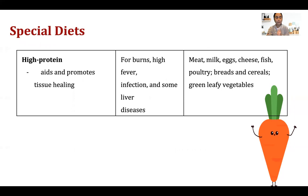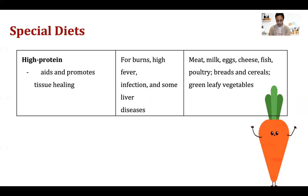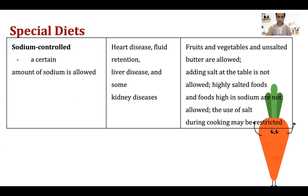High-protein diet is for tissue regeneration and tissue repair. It is vital for patients with burns, high fever, infection, and some liver diseases. Sources of protein include meat, milk, eggs, cheese, fish, poultry, breads, cereals, and green leafy vegetables.